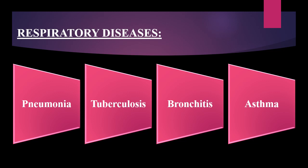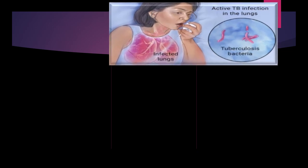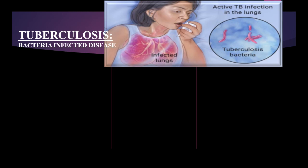Now we are going to discuss the symptoms, remedy, and prevention of these diseases in this video session. In this slide, you can see a girl who is coughing — her lungs are infected very badly. One type of bacteria called tuberculosis bacteria has infected her lungs, so she is affected with TB infection. The name of this disease is tuberculosis.